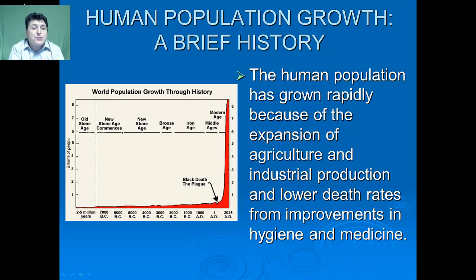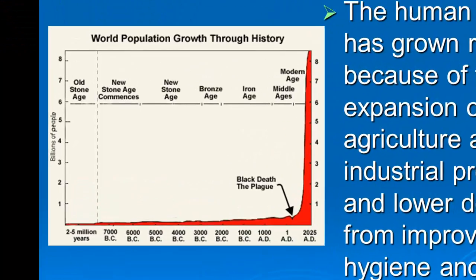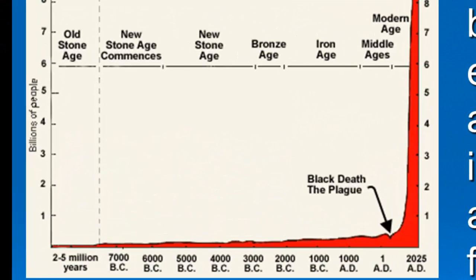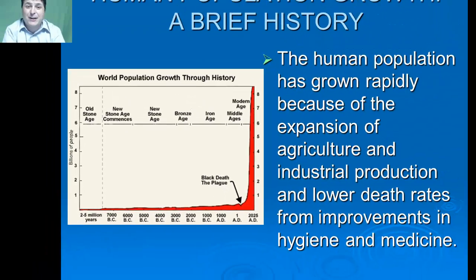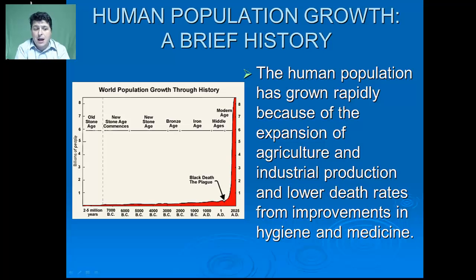It took almost all of known human history to reach our first billion individuals. 130 years later, in 1930, we were at the 2 billion mark and added the most recent billion in only 12 years. We have had this ever increasing rapid growth because of our expansion of agriculture and industrial production, as well as lower death rates as a result of improvements in hygiene and medicine.